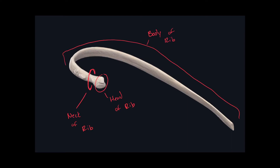Right in between where the neck of the rib is located and where the body of the rib begins, we have a small little bump. This little bump is called the tubercle of a rib. In the last video, we learned about costal fovea of a transverse process of a thoracic vertebra. Those costal fovea actually articulate with the tubercle of a rib. The next landmark is a small indentation found on the inferior portion within the inner side of the rib, called the groove of a rib.